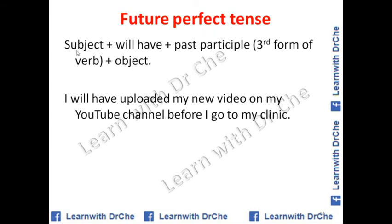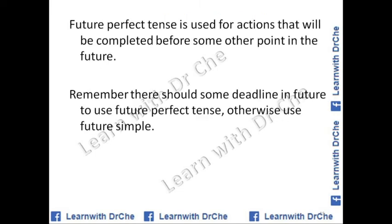Future perfect tense: subject plus will have plus third form of verb plus object. For example: I will have uploaded my writing course on my YouTube channel before I go to my clinic tomorrow. Future perfect tense is used for actions that will be completed before some other point in the future. There should be a deadline in the future to use future perfect tense; otherwise, we use future simple.